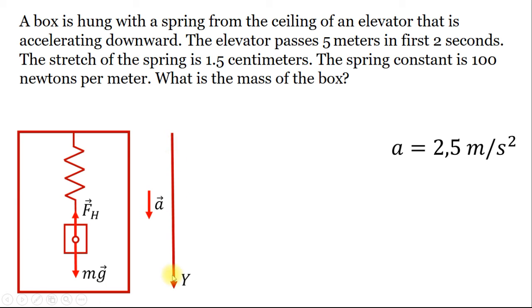Let's point the y-axis in the downward direction. According to Newton's second law, we can write that mg minus Hooke's force equals m times a, where m is the mass of the box.